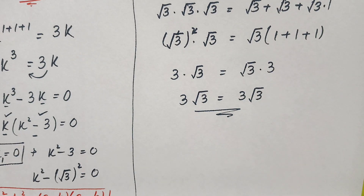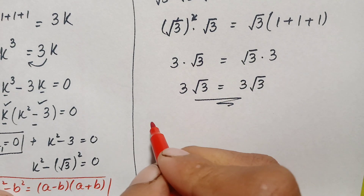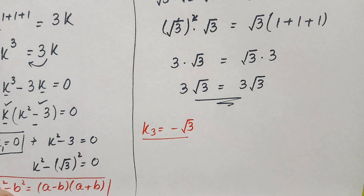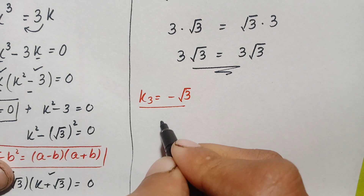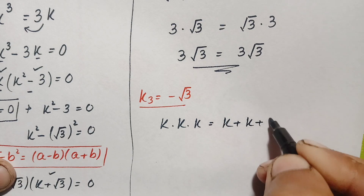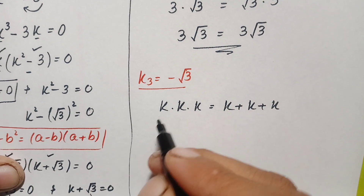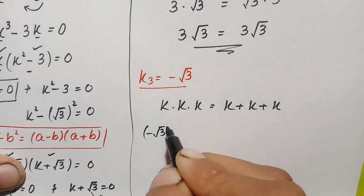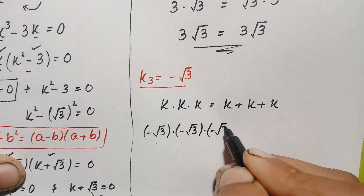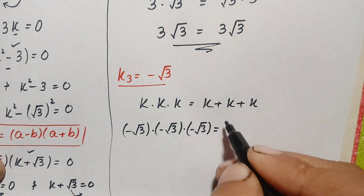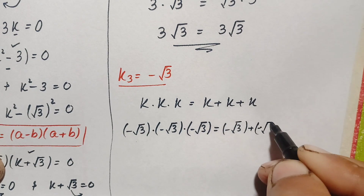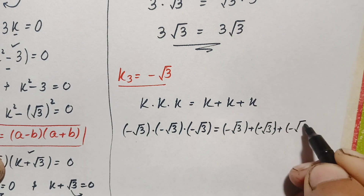Now we verify the third solution, k₃ equals negative √3. We write the original problem: k times k times k equals k plus k plus k, and replace k with negative √3. The left side becomes (−√3)(−√3)(−√3) and the right side becomes (−√3) plus (−√3) plus (−√3).